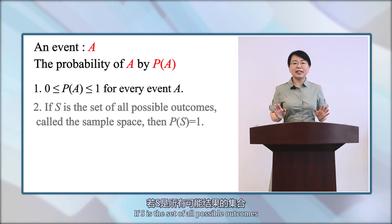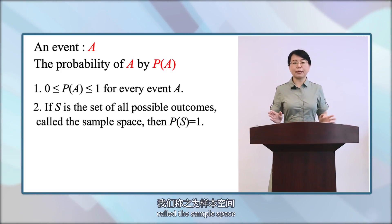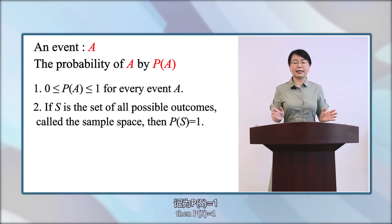Second, if S is the set of all possible outcomes, called the sample space, then the probability of S is 1.